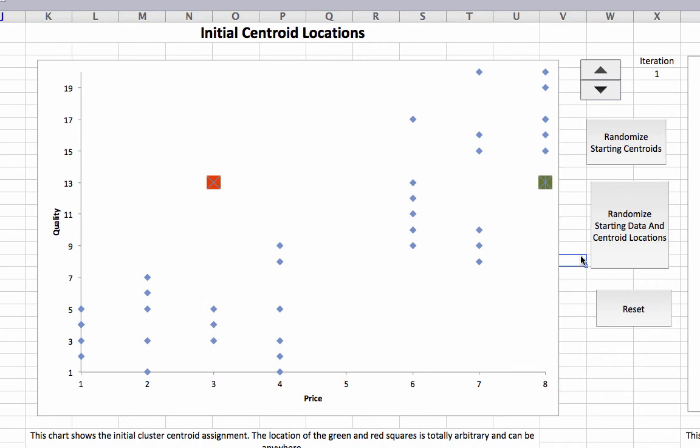This is an Excel file which I've uploaded and made available to you. I've created some artificial data that varies on two dimensions: one is price and one is quality. Each blue dot represents a person's preferences for those things.